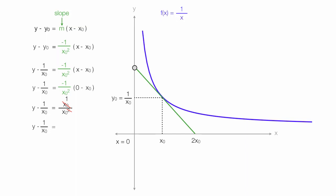So now I have y minus 1 over x0 is equal to 1 divided by x0. Now I add 1 over x0 to both sides of the equation to isolate the y. So 1 over x0 cancels with that 1 over x0. So I'm left with y is equal to 1 plus 1, which is 2, divided by x0. And that is the y-intercept.